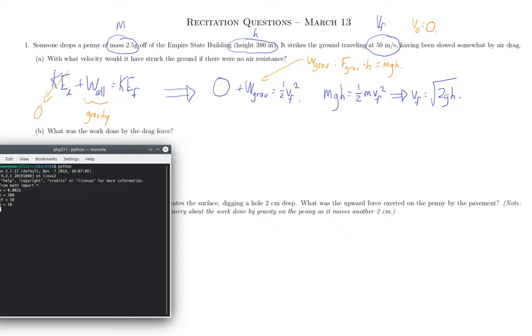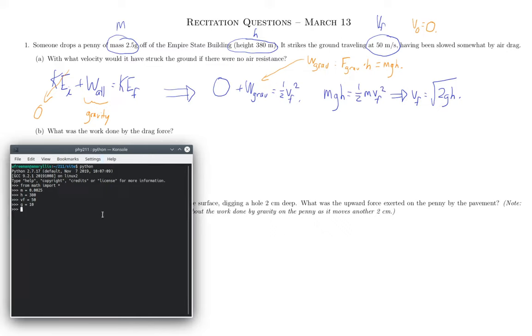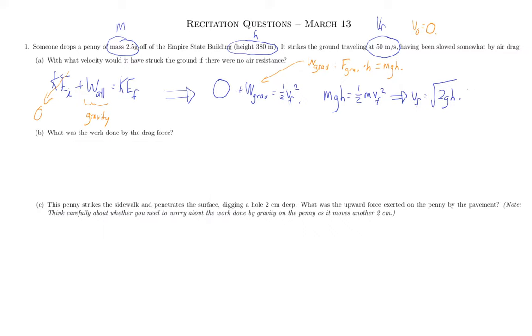Now, if I'm looking for the final velocity without air drag, that's for part A, then we want to print the square root of 2 times g times h, which is 87.2 meters per second. So that's very fast. But we know that it really only goes, or it was only going at 50 meters per second when it hit the ground. So this value, the 87.2, is what you'd get if you did this on the moon. But on Earth, where there's drag, we get a much lower value of only 50 meters per second.